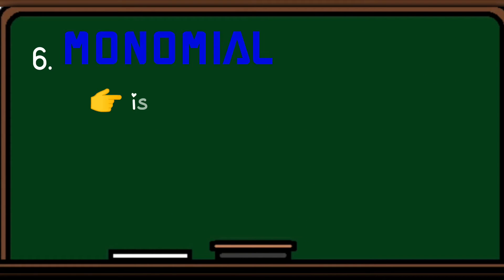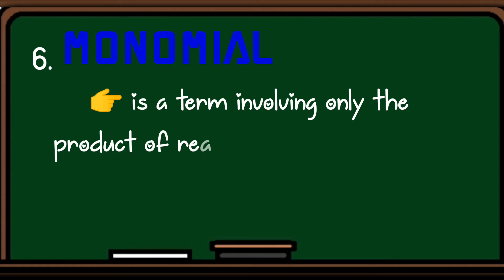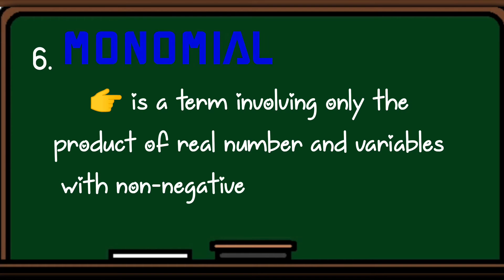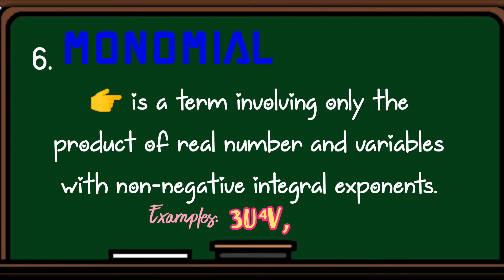Number six, monomial. A monomial is a term involving only the product of real number and variables with non-negative integral exponents. Example, 3u to the fourth power v, negative 6xy, and t. Kaya siya tinawag na monomial kasi only one term lang.